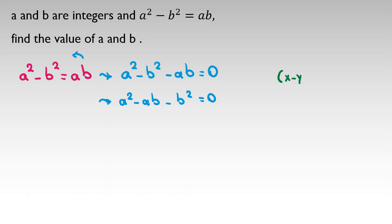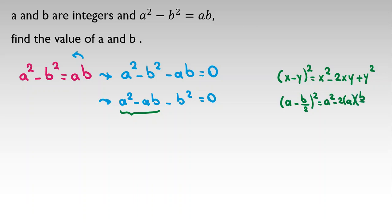The identity is: (x minus y) squared equals x squared minus 2xy plus y squared. I want to use this. If I place (a minus b/2) squared — I chose b/2 because it creates minus 2 times a times b/2, which gives negative ab, exactly what we want. So (a minus b/2) squared equals a squared minus ab plus b squared over four.